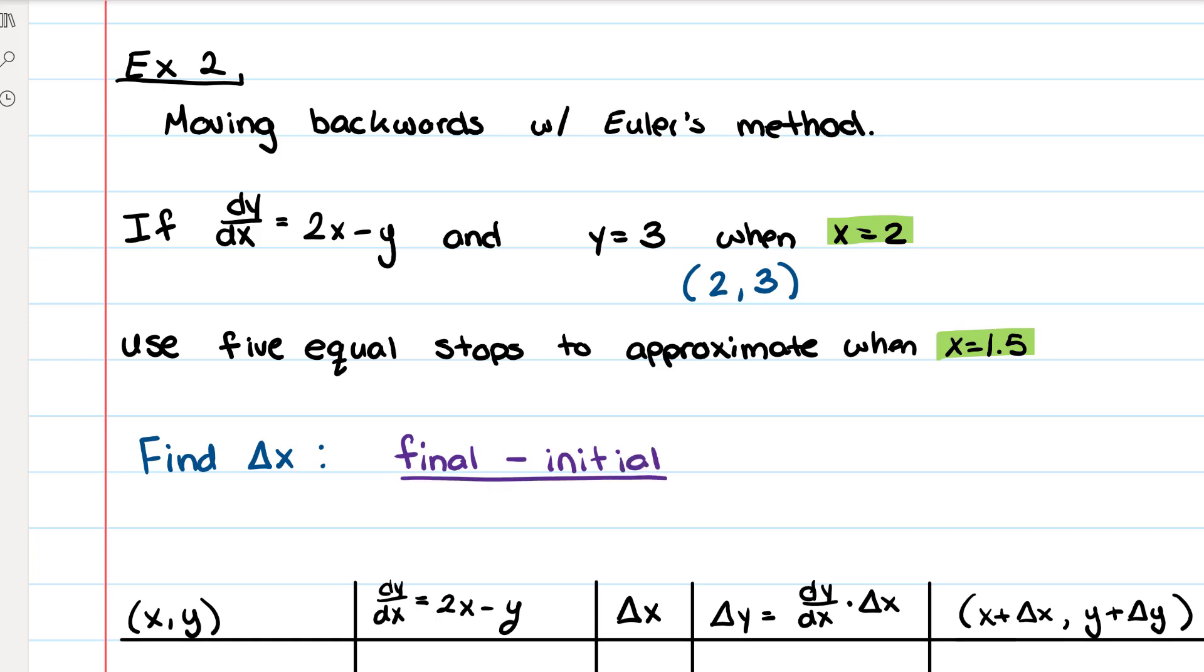which is 1.5, and the number of steps, which in this case is going to be 5, because it says 5 equal steps.